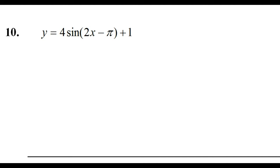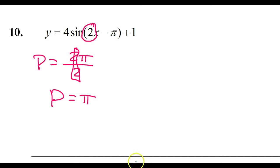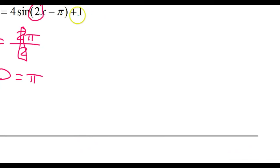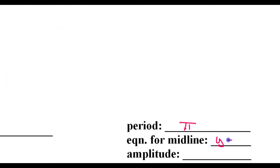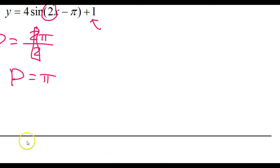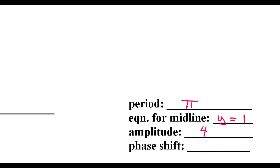Let's do one more example — number 10. The period is what we do first. We get the period by doing 2π divided by the b value. The b value here gives us a period of π. The equation of the midline comes from the k value — that vertical shift — which gives y = 1. The amplitude comes from the number in front, so amplitude is 4. Amplitude is always positive, by the way.